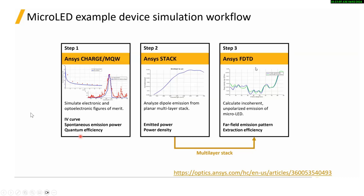In this video, which is focused on this part, we want to use ANSYS FDTD to calculate the incoherent, unpolarized emission of micro-LED. We want to calculate the far field emission pattern and extraction efficiency. More details of this workflow can be found by following this link.